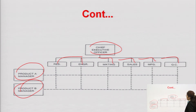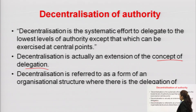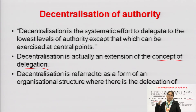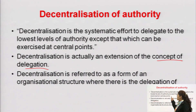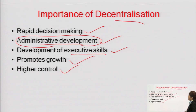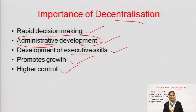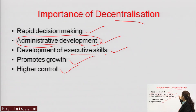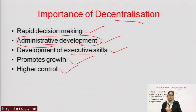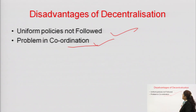Regarding decentralization of authority, the whole organization is divided into departments and the whole work is allocated to different departments or certain groups of people — that process is known as decentralization of authority. We also discussed the importance of decentralization: specialization exists in the organization, better and prompt decision making occurs, higher control is there, and the growth of the organization is also promoted. We also discussed the advantages and disadvantages of decentralization of authority.